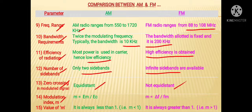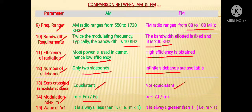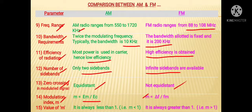Next is about modulation index. In AM, the modulation index is given as Em upon Ec, where Em is the amplitude of the modulating signal and Ec is the amplitude of the carrier signal. In case of FM, the modulation index is equal to ΔF upon Fm, where ΔF is the deviation in frequency and Fm is the modulating frequency.